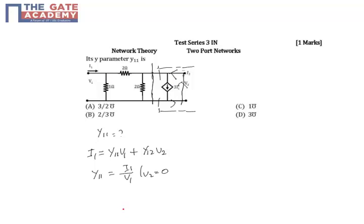To determine Y11, we have to establish a relationship between V1 and I1. Now that we have made V2 equal to 0, the circuit is ready to derive this relationship.